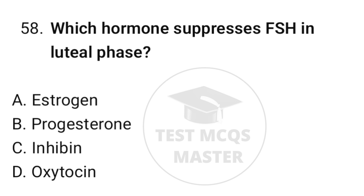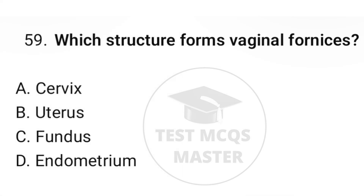Question number fifty-eight: which hormone suppresses FSH in the luteal phase? The correct option is C, inhibin. Question number fifty-nine: which structure forms the vaginal fornices? The correct option is A, cervix.